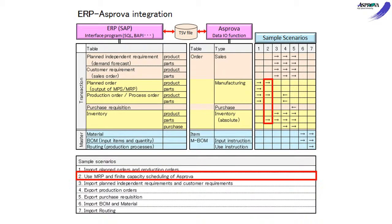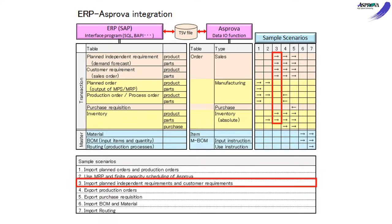Scenario 2: Use MRP and finite capacity scheduling of Asprova. Scenario 3: Import planned independent requirements and customer requirements.